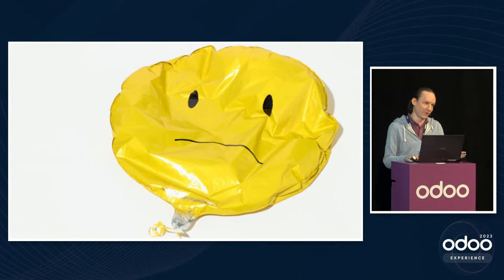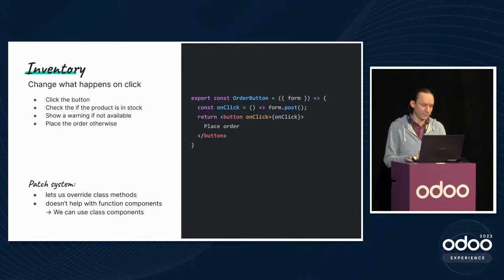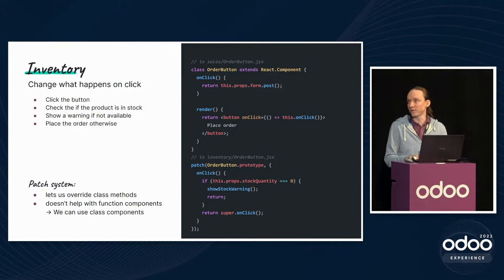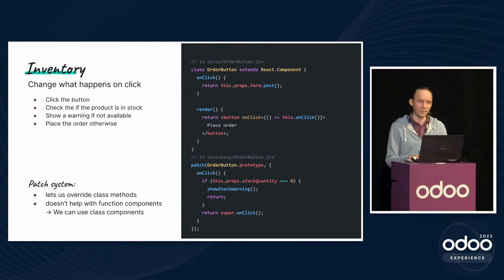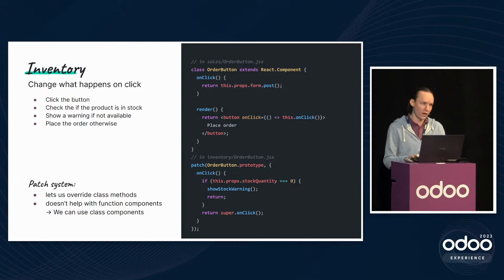This is like your tire being deflated at -150°C. The solution is to use a class component instead. I've converted the order button into a React class component — the onclick is now a method rather than an inline function. In the inventory module we patch the prototype of this OrderButton to override the onclick method, checking if stock quantity is zero, showing a warning and stopping, or otherwise calling the original method.